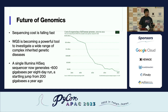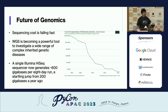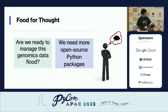Finally, the sequencing cost has fallen so much over the past couple of decades that whole genome sequencing is becoming so cost-efficient that almost anyone can do it. For applications like personalized medicine, it will become increasingly prevalent. To tackle this deluge of sequencing data, we need to be prepared. The question is whether we, as a community, are prepared to help life scientists explore these huge datasets using Python-based tools. We need more open source Python packages to help them do their analyses more efficiently.